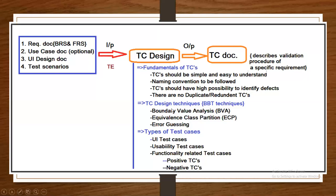The test case design techniques are nothing but black box testing techniques, like boundary value analysis and equivalence class partition. These are the major techniques we are going to use. Apart from those, we also have two more: decision table and state transition coverage. These two are also optionally used.